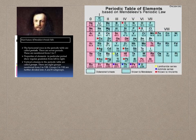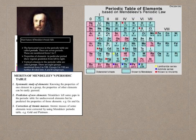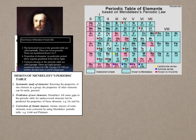Let's see the merits of Mendeleev's periodic table. Science is progressive, and there is freedom in science to revise old inferences using more advanced means and methods. These characteristics of science are clearly seen in Mendeleev's periodic table. The first merit is the systematic study of elements: knowing the properties of one element in a group allows the properties of other elements in the same group to be easily predicted.